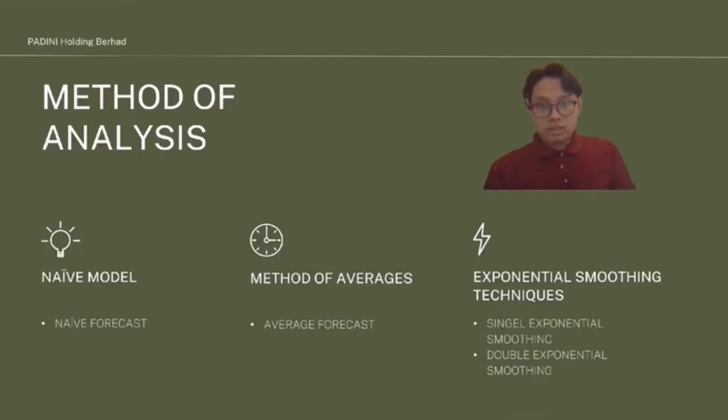From this graph, independent variable is close price of Padini's stock market while dependent variable is date based on monthly. For the method of analysis, we use 4 models which are naive forecast, average forecast, single exponential smoothing, and double exponential smoothing.